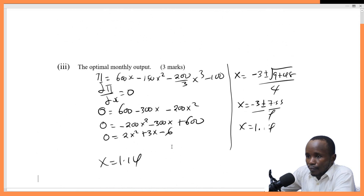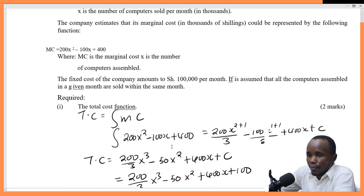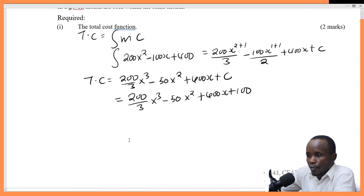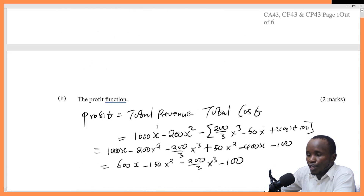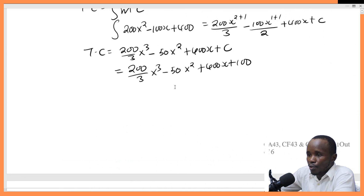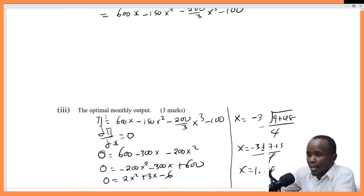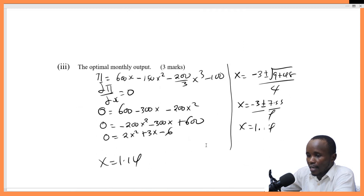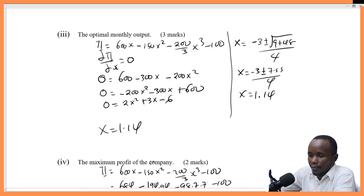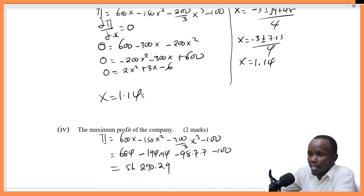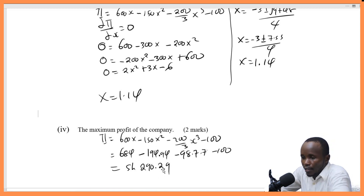That's how you solve this question. The first part asks for the total cost function — integrate the marginal cost to get it. For the profit function, use total revenue minus total cost; the revenue function is given and you integrate the marginal cost to get the total cost function, then subtract. For the optimal monthly output, differentiate the profit function and solve for x. Then substitute those quantities back into the profit function to get the maximum profit. Goodbye for now — we'll meet in our next video.